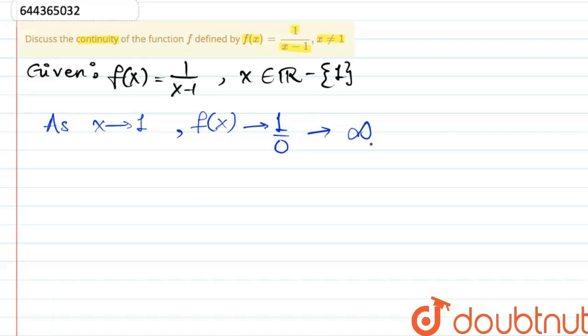Therefore since there is no real value that f approaches as x approaches 1, f(x) is not defined at 1. However, it is defined everywhere else except 1.